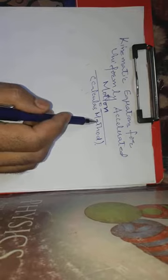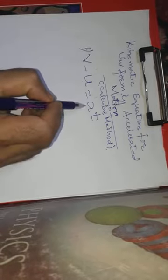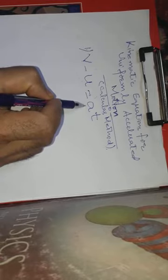Now in this lecture we will use the calculus method. The first equation, if you remember, is V minus U is equal to AT. This is equation number 1. Here, V is the final velocity of the body, U is the initial velocity, A is the acceleration produced when the velocity changes from U to V, and T is the time taken for the change.